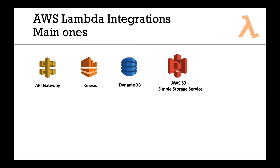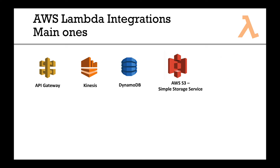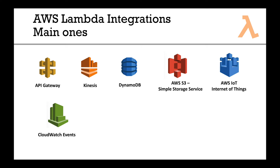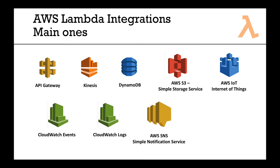There's also integration with AWS S3, where you store large objects and files like images for a long time — we'll have an S3 integration example creating thumbnails. Lambda can also integrate with AWS IoT for Internet of Things, CloudWatch Events if you want to run things on a schedule or cron job, CloudWatch Logs for streaming log analysis, SNS for notifications like sending emails to users, and Cognito for user integration. There are tons of integrations, and we'll walk through the main ones.